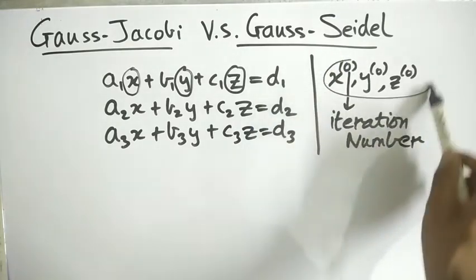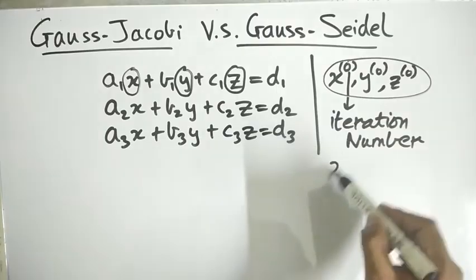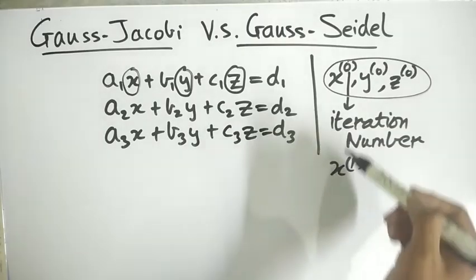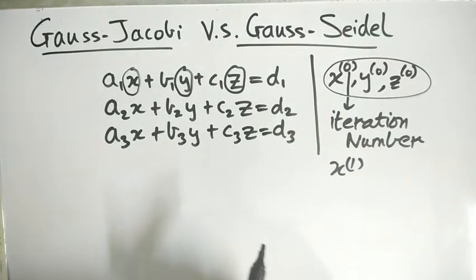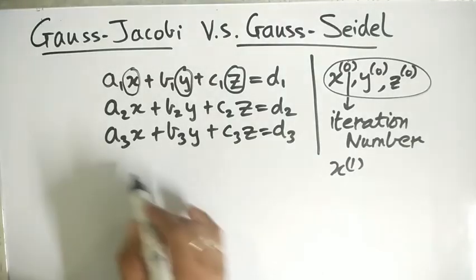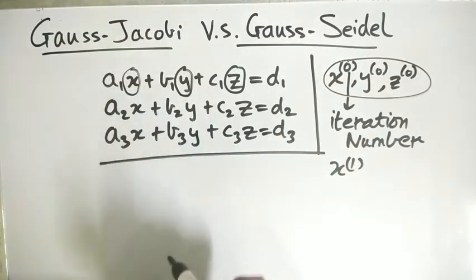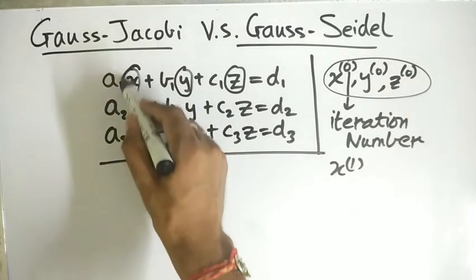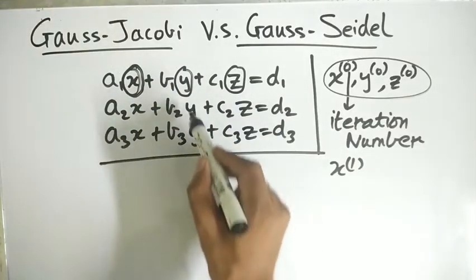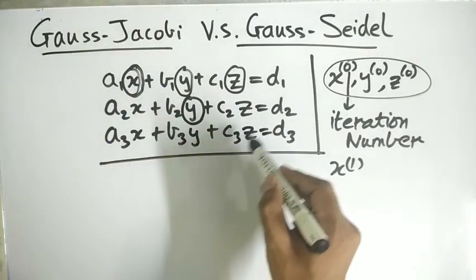So the initial values, when we iterate it, then it will become x1 after the first iteration. Next, we write these equations as to get x from the first, y from the second, and z from the third.